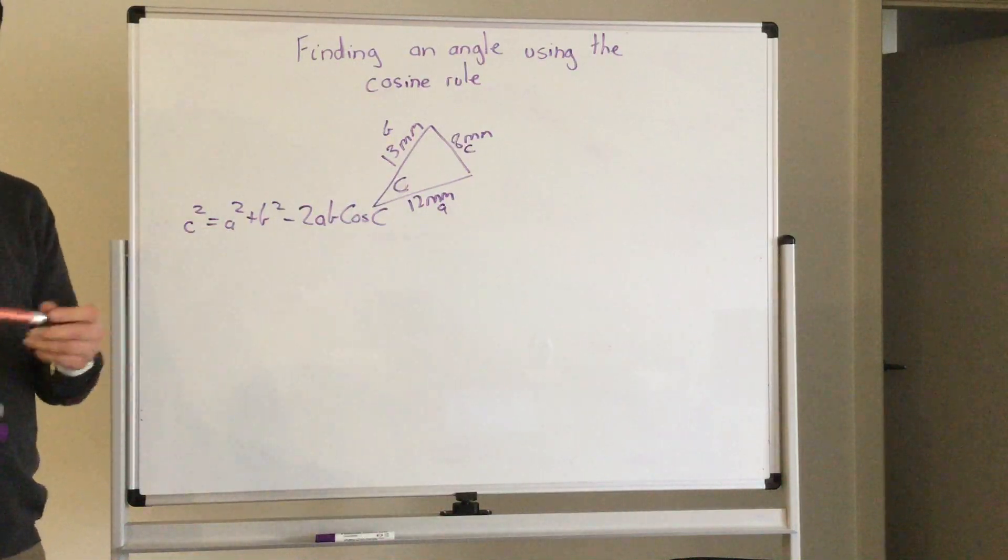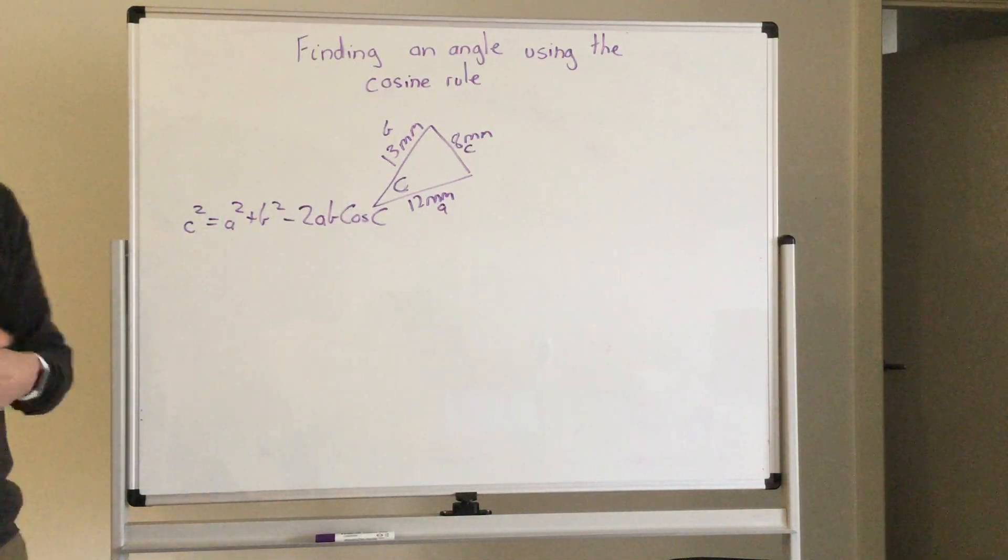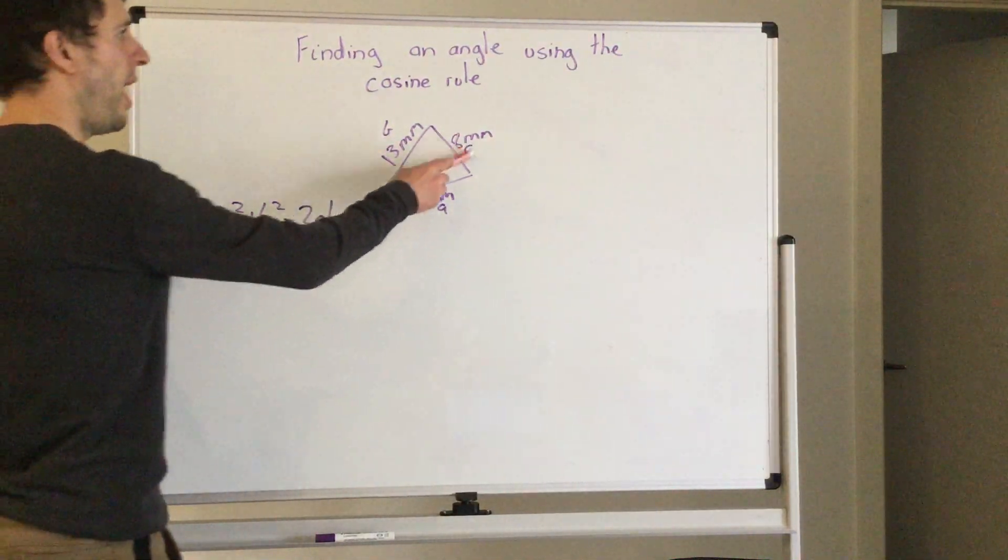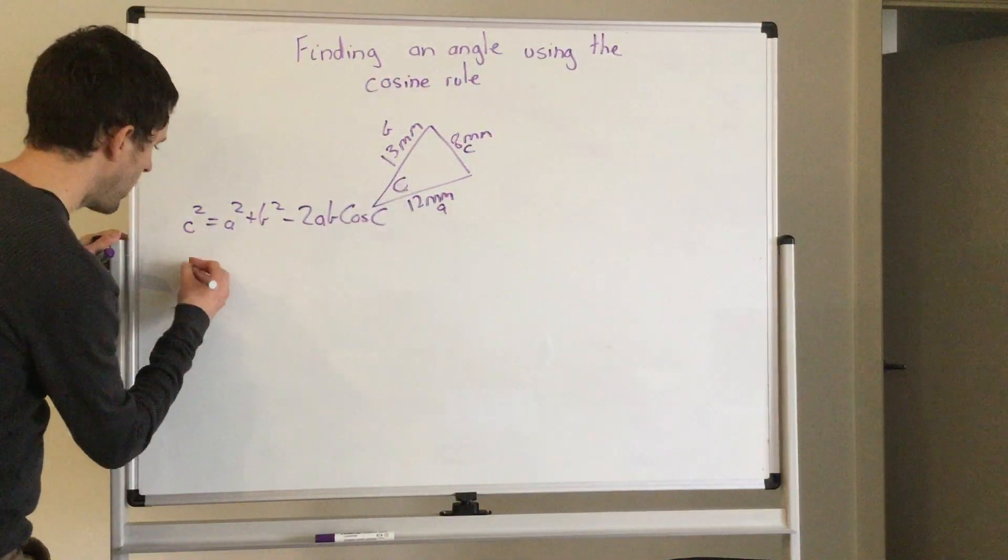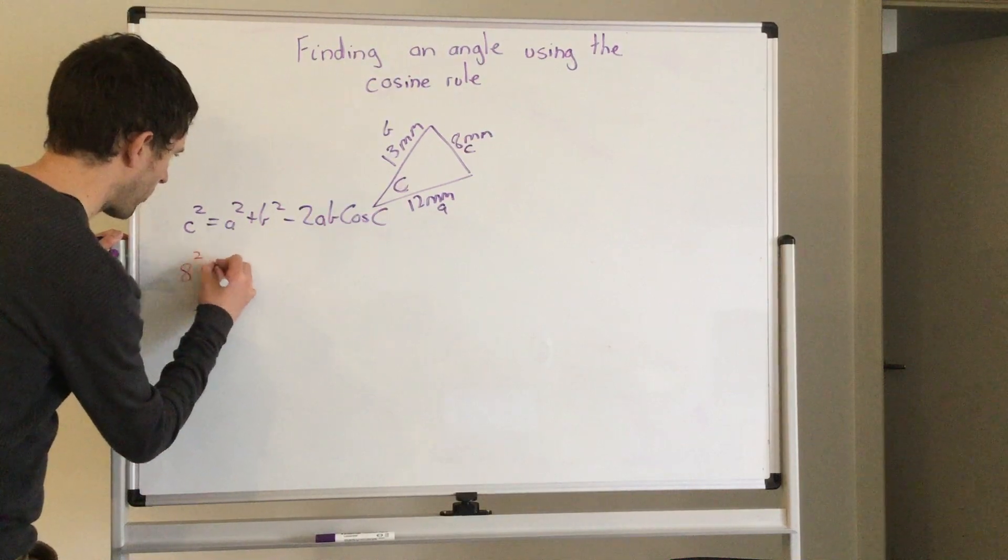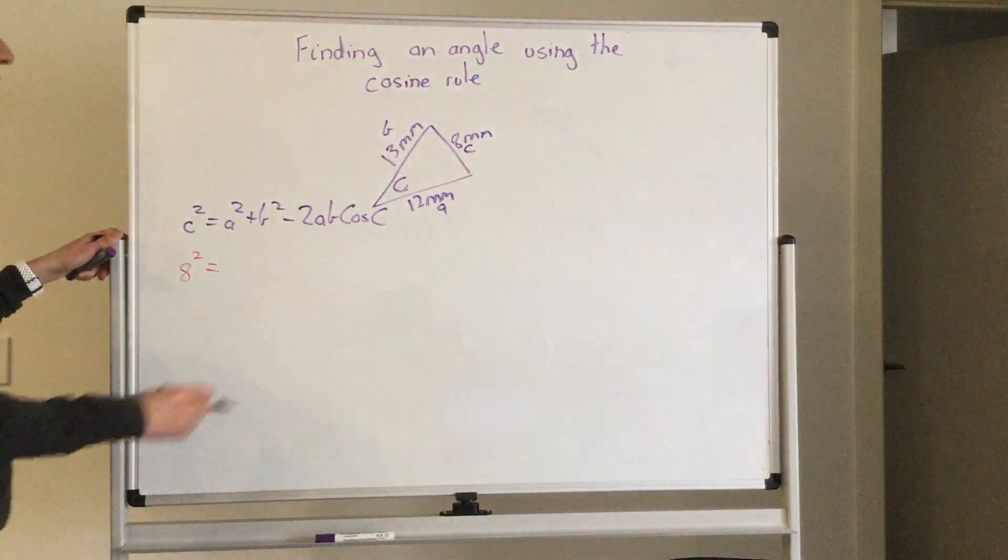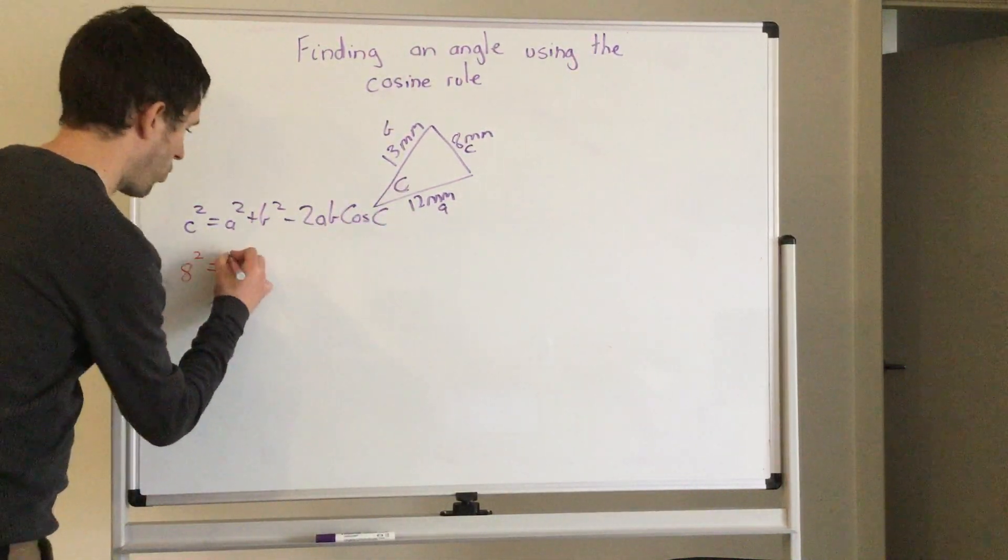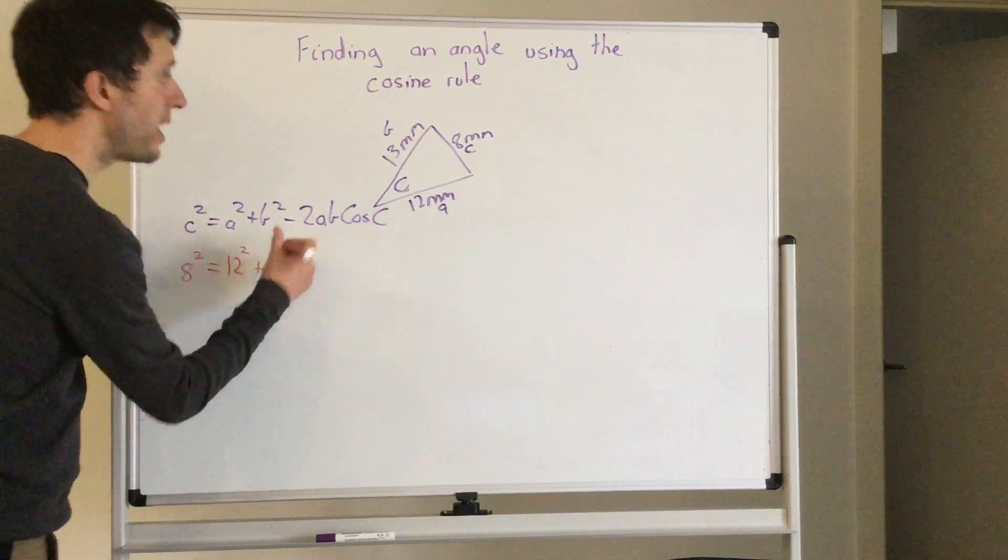Now that I know that, all I need to do is substitute my values. So I know c is 8, so 8 squared equals a squared, so 12 squared.